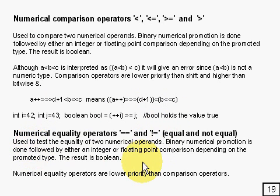And binary numerical promotion is blah blah blah. Followed by integral floating point comparison. Exactly what you'd expect. So no surprises there.